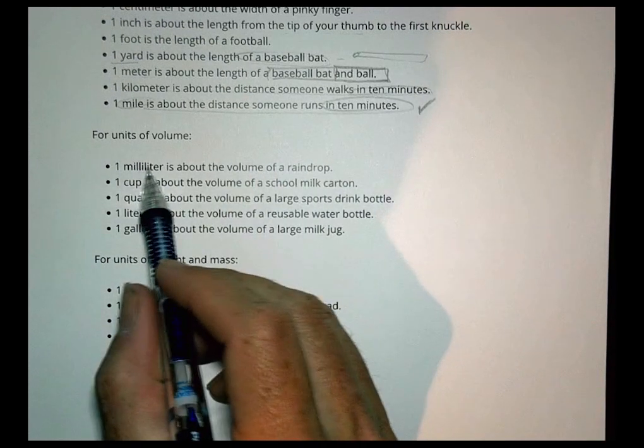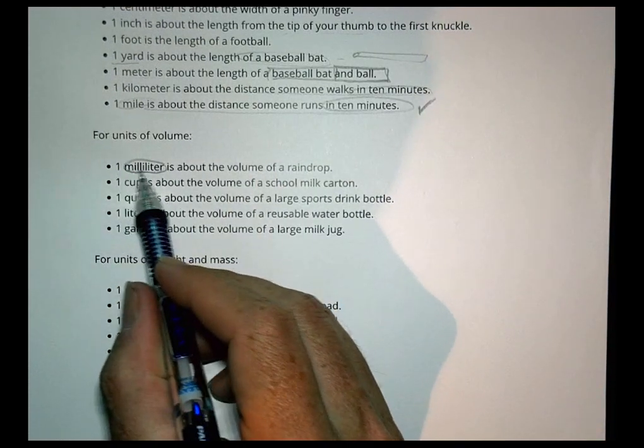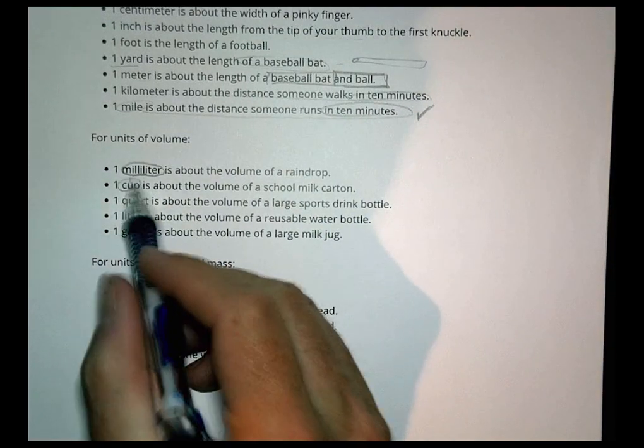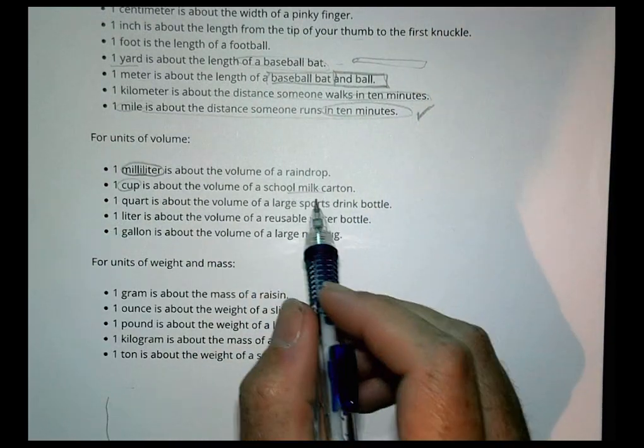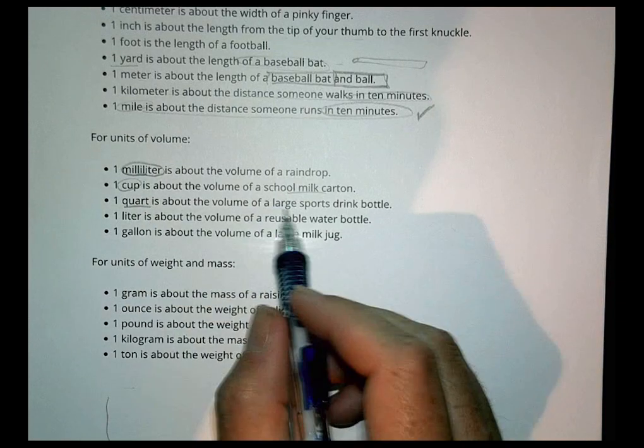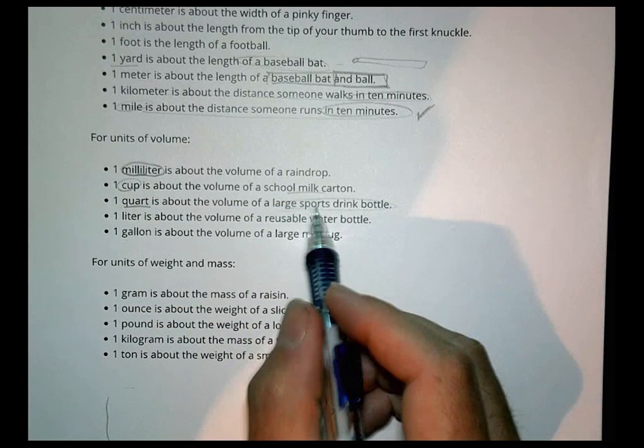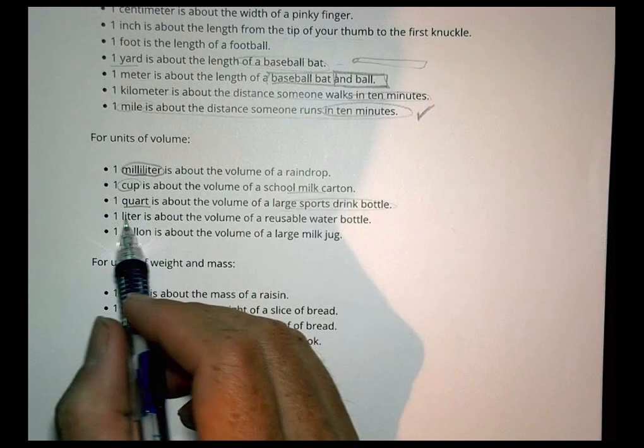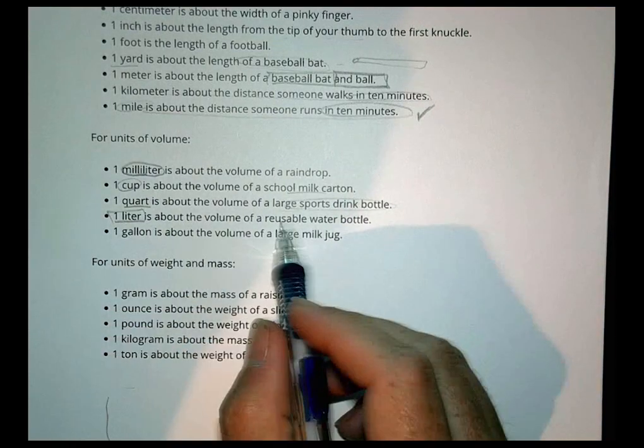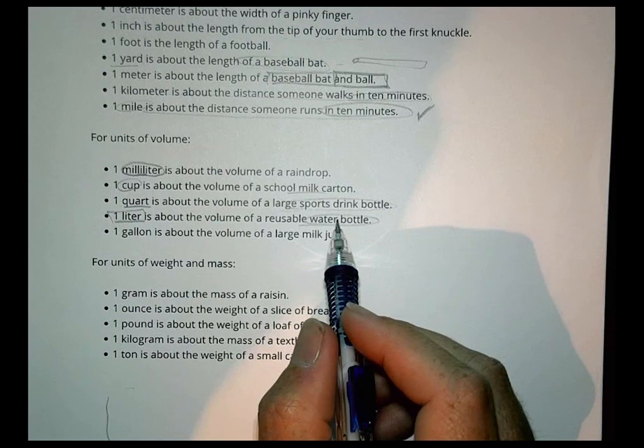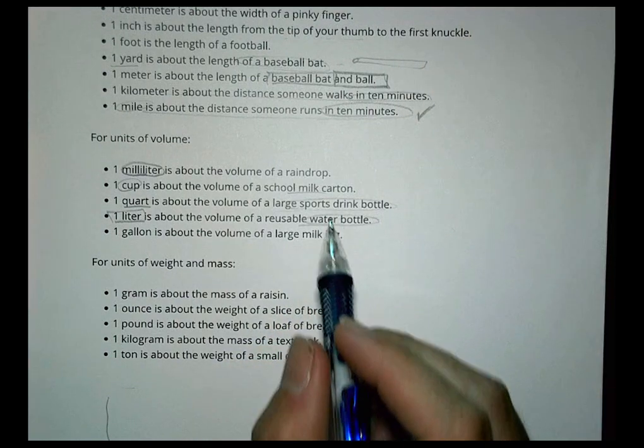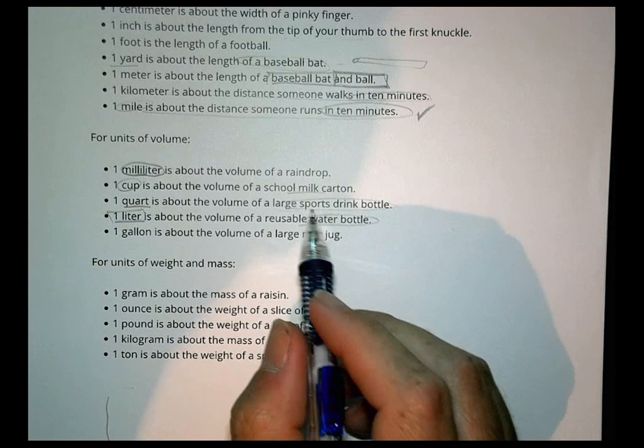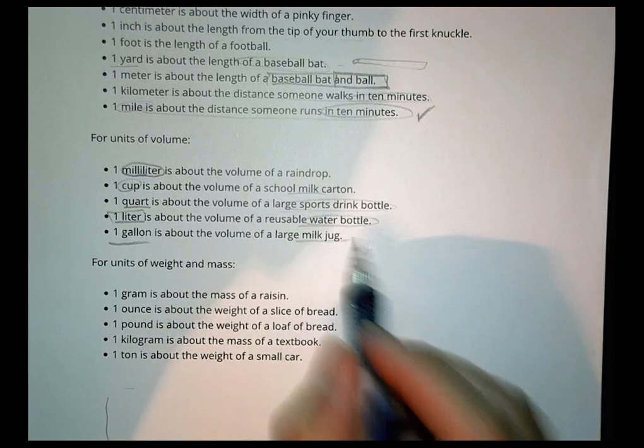Volume. Milliliter. Milliliter is about the volume of a raindrop. So we're talking really small there. Cup is like your school milk carton. A quart is a large sports drink bottle. So when you have a big Gatorade bottle or a Powerade bottle, that's about a quart. A liter is a reusable water bottle. So if you have your hydro flask, whatever you have at your school, that would be what might be about a liter. And a gallon is like a milk jug.